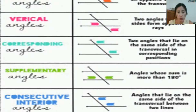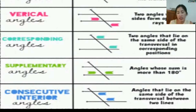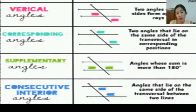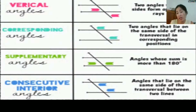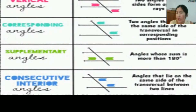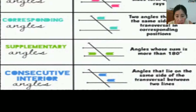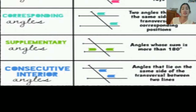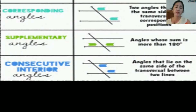Next is consecutive interior angles, just like the angles colored blue. They are consecutive because if you start from one you go down, so one is next to the other. They are interior because they are on the inside of the parallel lines. Are they congruent? No — they are supplementary. They are angles that lie on the same side of the transversal between the two parallel lines.